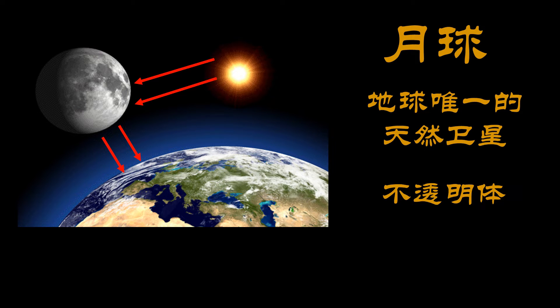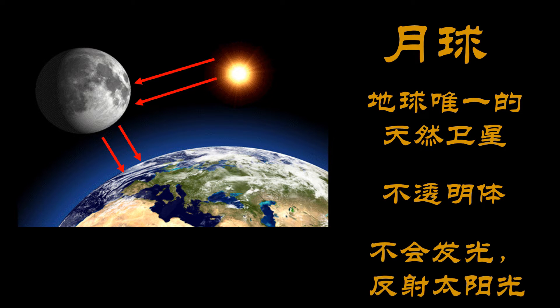月球不是一颗恒星，所以不能自己发光发热。月球是不会发光的，月球的光是反射太阳的光。(The Moon is not a star, so it cannot emit light or heat on its own. The Moon does not glow — its light is reflected sunlight.)